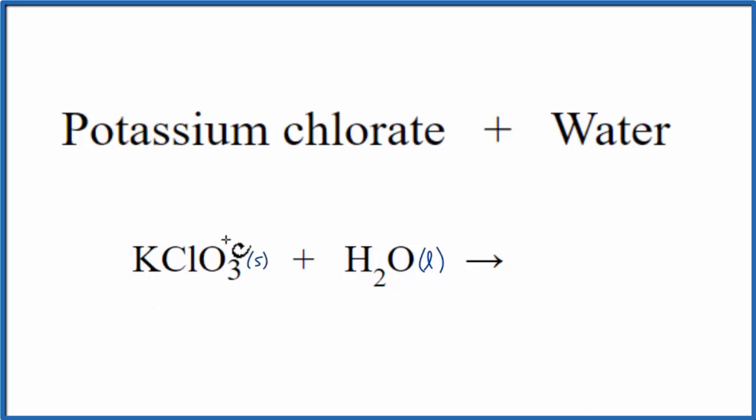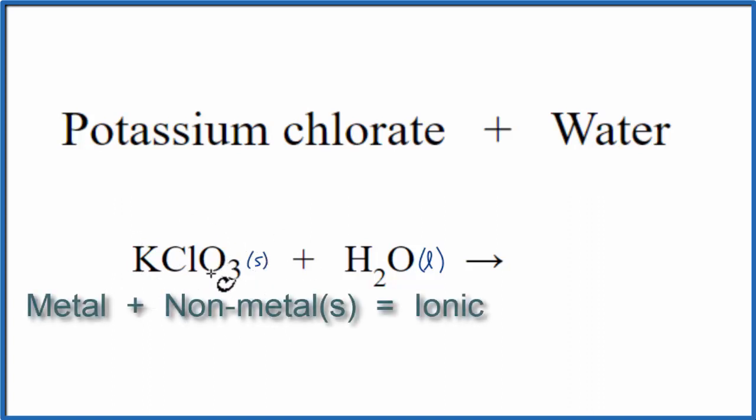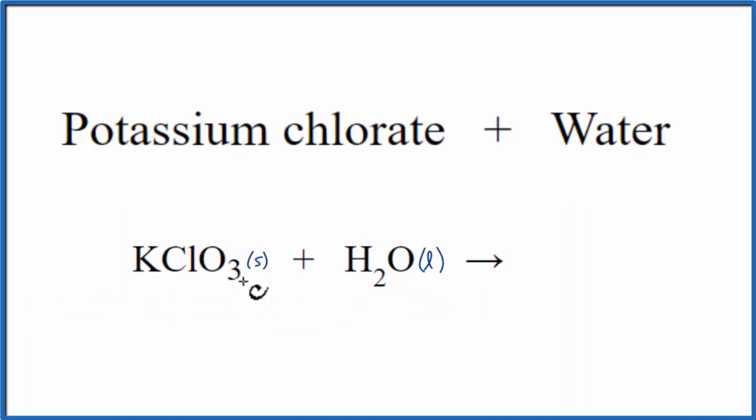Potassium is a metal, and the chlorate ion is made up of nonmetals. So when we have a metal and nonmetals, that's an ionic compound, and often they're soluble in water. But we should check a solubility table to see if that's the case for KClO3.